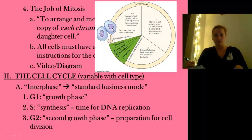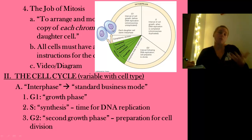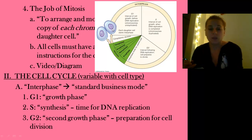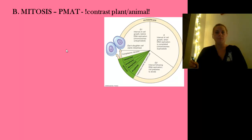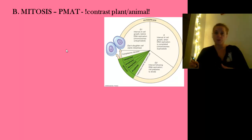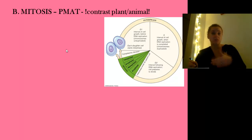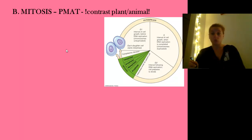We haven't even talked about mitosis yet. Really, all mitosis is is the separation of the nuclear contents. Interphase is normally the longest time of the cell cycle, and we break it into three parts. Now mitosis is about to happen — the division of the nuclear contents. There's a little difference between the way plant and animal cells go through this process, and we're going to see that in the lab.